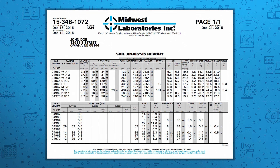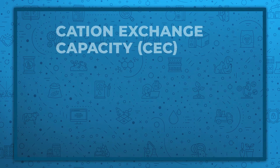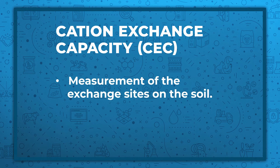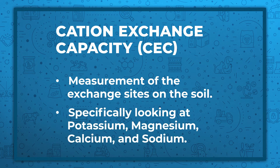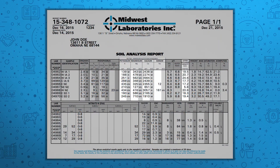When I look at soil samples for the first time, cation exchange capacity is a good starting point to evaluate the soil's physical characteristics and potential nutrient holding capacity. Cation exchange capacity, or CEC, is a measurement of the exchange sites on the soil. It's a negatively charged exchange site that holds cations. These cations that we reference in the soil specifically include potassium, magnesium, calcium, and sodium. In order to get a CEC value, Midwest Laboratories uses a neutral ammonium acetate extraction to bring out the cations, and then we measure those on an instrument.